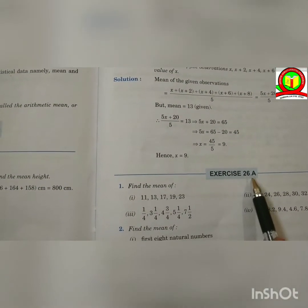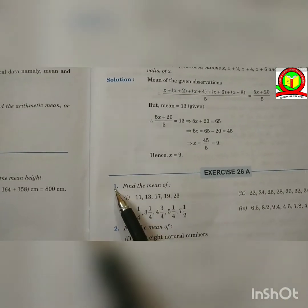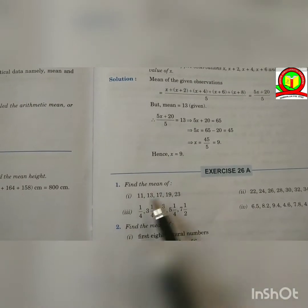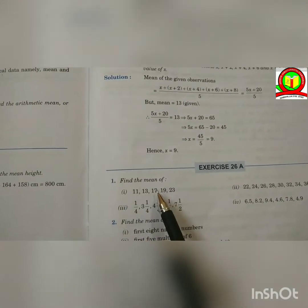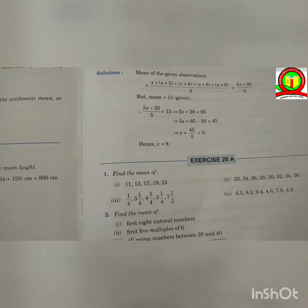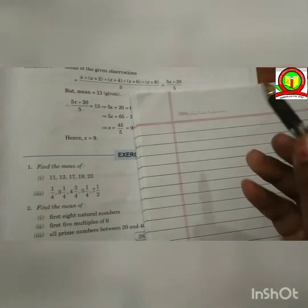So, here we have our first exercise, exercise 26A. In the first question, find the mean of first one: 11, 13, 17, 19 and 23. So, we have to find out the mean.